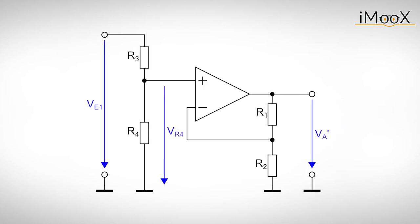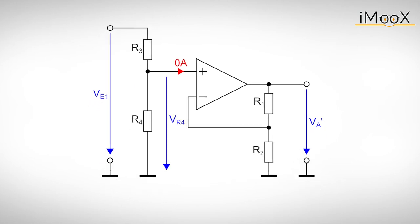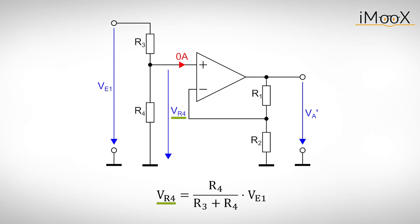We redraw the circuit and see that we now have a voltage divider followed by a subsequent non-inverting amplifier. According to our rules the non-inverting amplifier does not put any load on the voltage divider. Hence the output voltage of the voltage divider Vr4 is given by R4 divided by R3 plus R4 times Ve1. Multiplying this voltage by the gain of the non-inverting amplifier gives the first output voltage Va'.